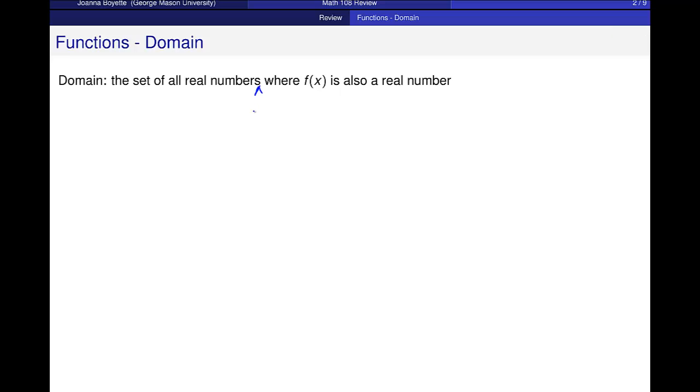So the domain is a description, real numbers x, where f of x is also a real number. In other words, it's a list of all inputs where the outputs are real numbers.